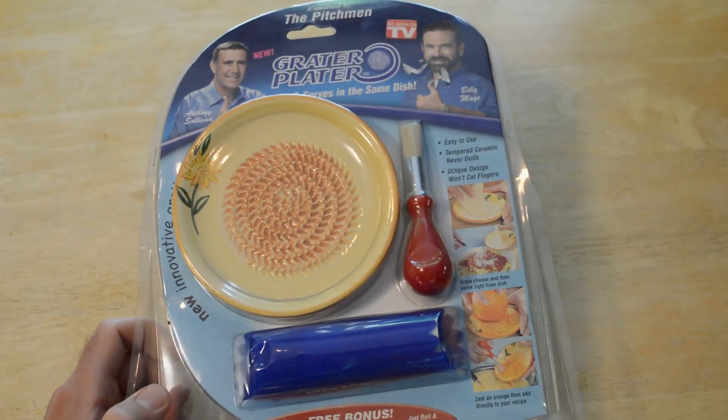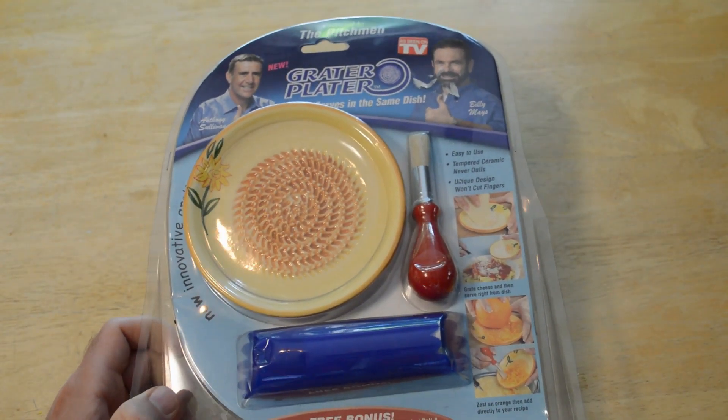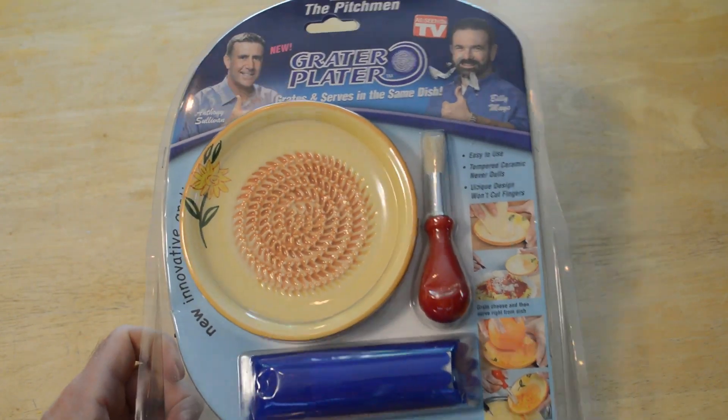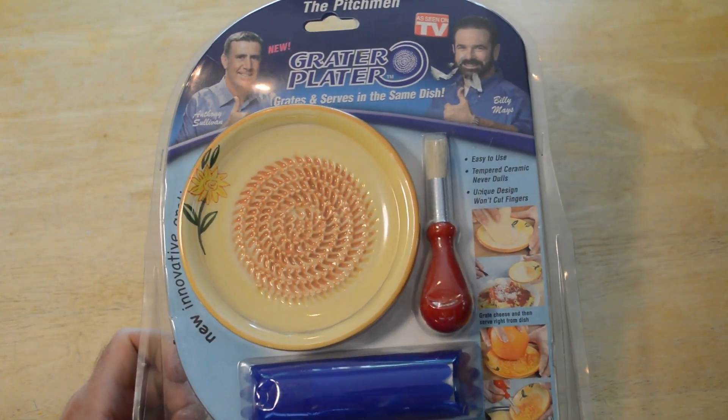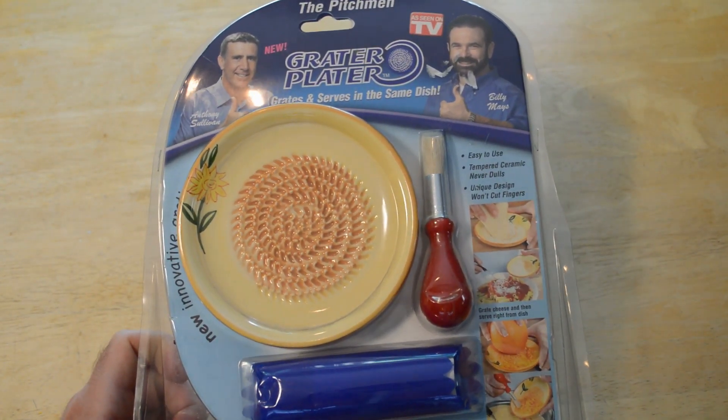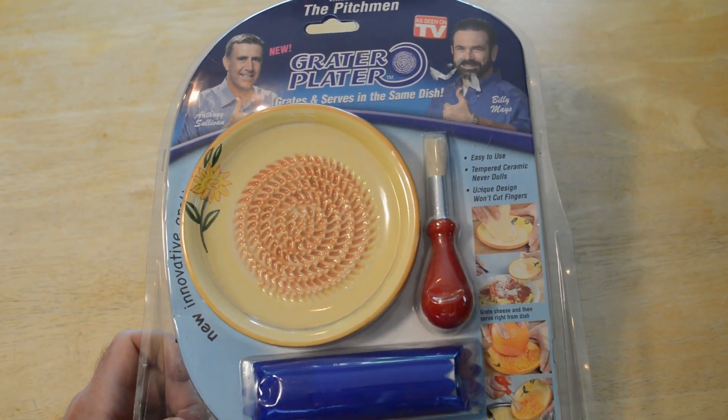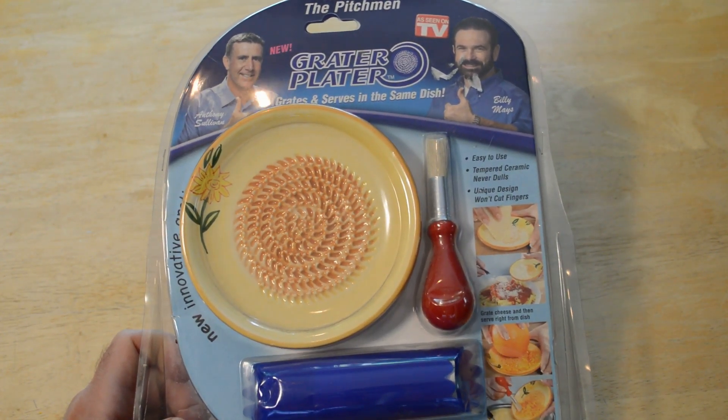Hey, what's going on everyone? Welcome to the As Seen On TV, a product that I'm surprised I haven't reviewed, but it's the As Seen On TV Anthony Sullivan and the one and only Billy Mays. This is the grater plater, grates and serves in the same dish.